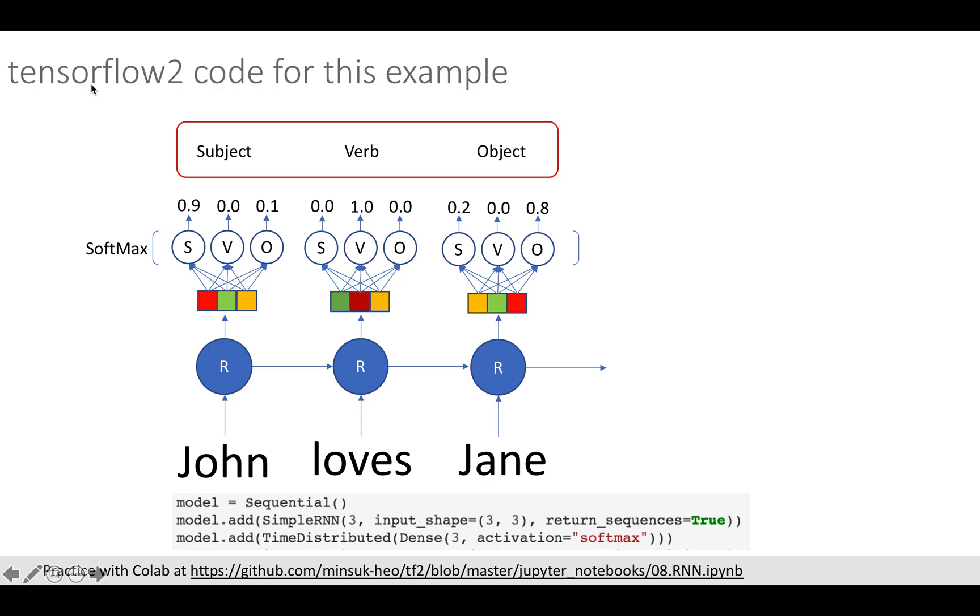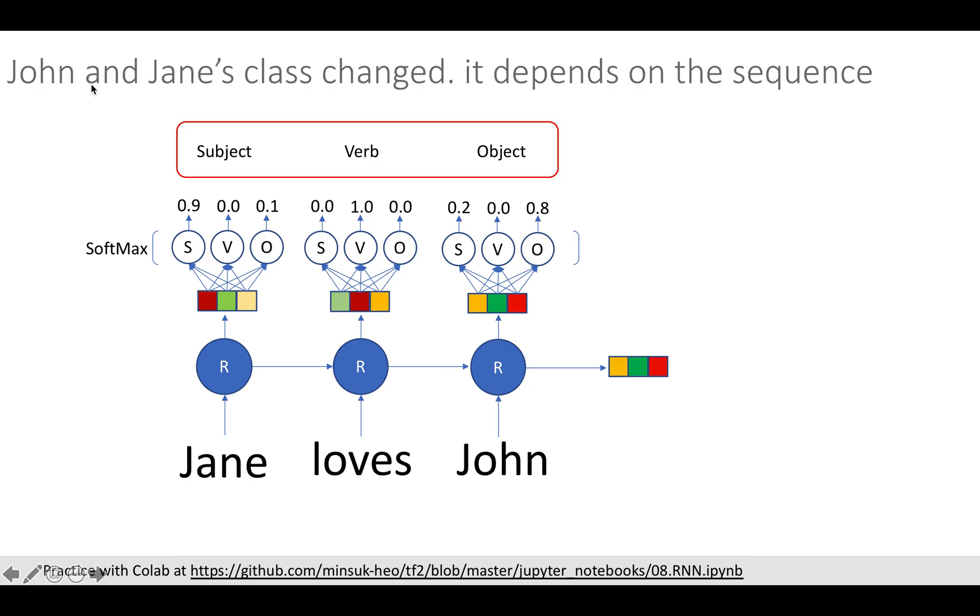Here you can see very simple TensorFlow code for implementing this as well. Remember to set the return_sequences as true to get each state, and use the TimeDistributed function to work with each state. Once you train the model, you will see John and Jane's class changes depending on its position. You can practice this from my GitHub link as well.